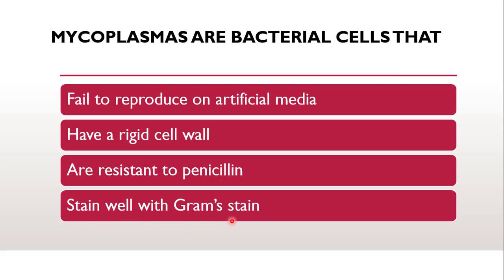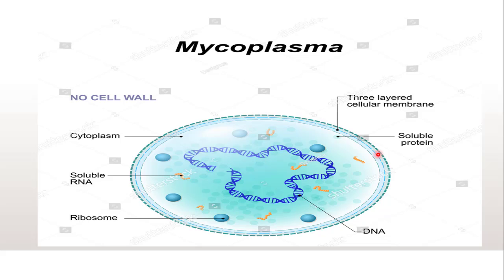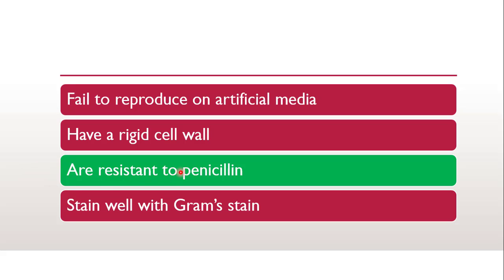So before going to the answer, we will see what are mycoplasmas. These mycoplasmas are bacterial species only — mycoplasma. But the difference is that they don't have any cell wall. Since they don't have any cell walls, any antibiotic cannot act on the cell wall. The famous beta-lactam antibiotic, that is penicillin, damages the cell wall. So since they don't have a cell wall, how will they be resistant to penicillin or beta-lactam antibiotics?